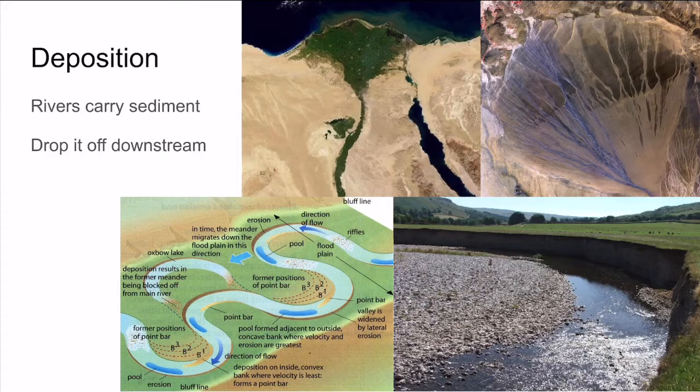In the lithosphere unit, we talked about a process key to the formation of sedimentary rocks — deposition. In this process, rock and soil are deposited by streams and rivers. This occurs when the speed of the water decreases and the water can no longer carry the sediment, so it's going to fall to the bed or alongside the inside of a river bend.